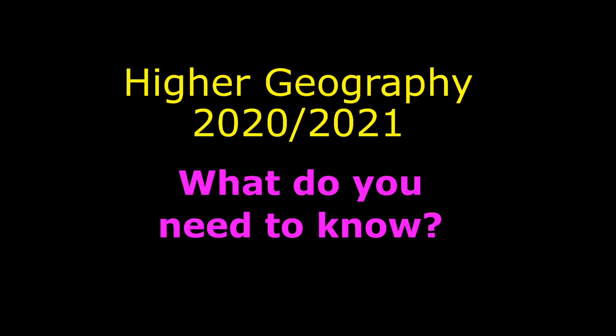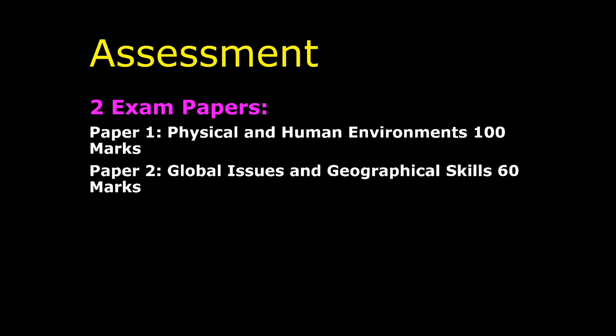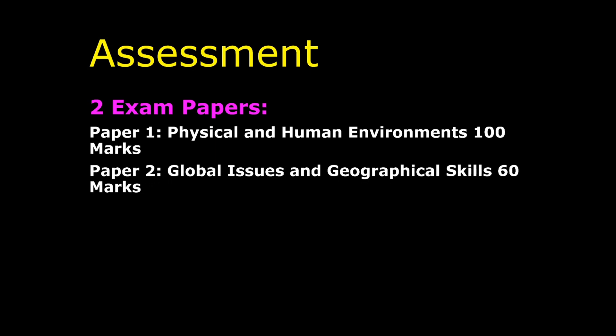Higher Geography 2020-2021 - what do you need to know? This is based on what we've done for previous years. This could all change given the unprecedented situation we find ourselves in, but at least to make a start, this is what we're looking at. Assessment-wise, you have two exam papers. Paper one is Physical and Human Environment and is worth 100 marks. Paper two is Global Issues and Geographical Skills and is worth 60 marks.